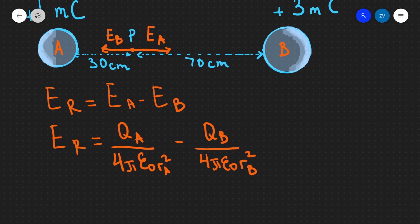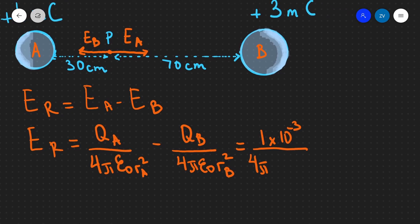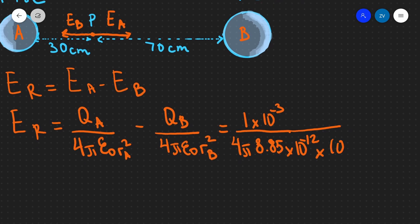Now we're ready to substitute some numbers into our formula. Charge A is 1 millicoulomb, so that's 1.0 × 10⁻³ coulombs, over 4πε₀ which is 8.85 × 10⁻¹² , multiplied by rA squared — which is 30 centimeters, converting to meters gives us 0.3 squared.